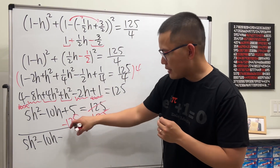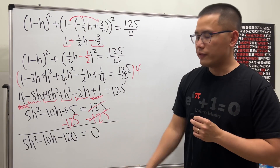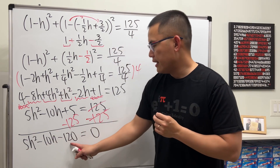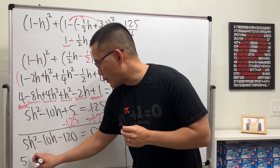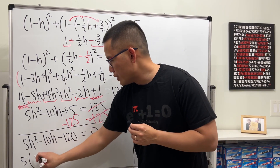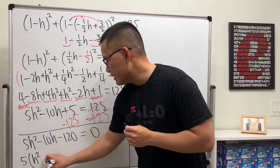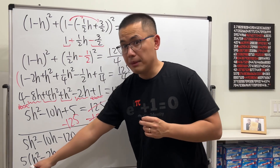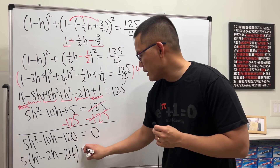Then minus 5 minus 125 gives minus 120, and that equals zero. Now how do we factor this? Notice we have 5, negative 10, and negative 120. We can factor out 5 first — that's easier. So: 5h squared divided by 5 is h squared, negative 10h divided by 5 is minus 2h, and negative 120 divided by 5 is minus 24. That equals zero.